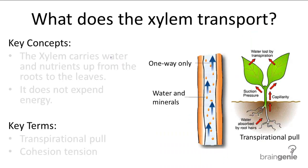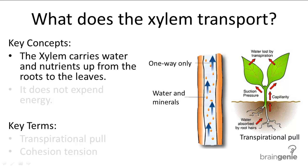We begin with the xylem. As we've mentioned before, it's always on the inside of a vascular tissue bundle, whereas the phloem is on the outside. It carries water and the dissolved nutrients up the plant. Despite moving against gravity, the water transport does not expend energy, which also means that xylem cells are dead and aren't doing the actual transporting.